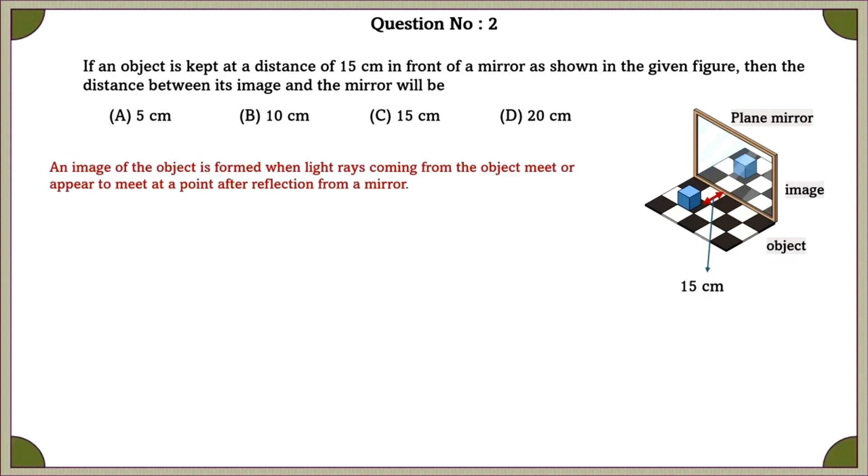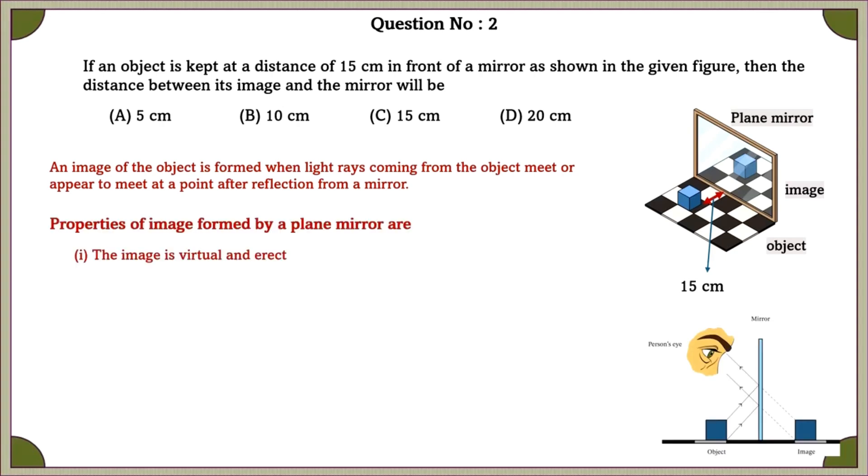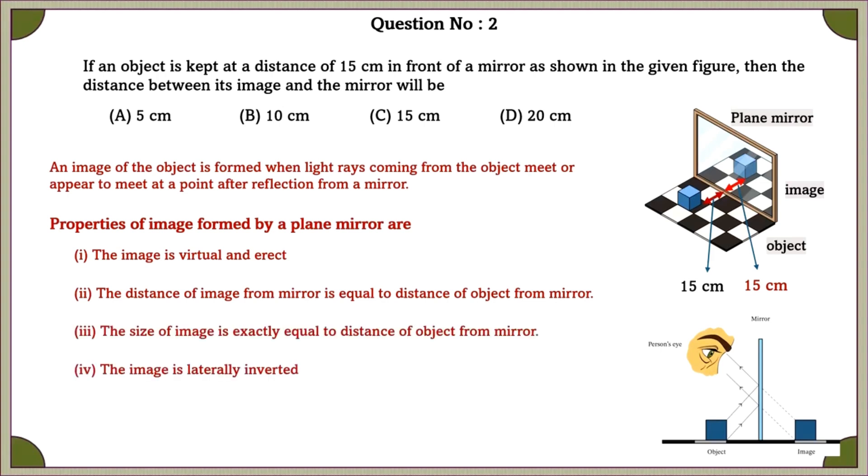An image of the object is formed when light rays coming from the object meet or appear to meet at a point after reflection from a mirror. Properties of image formed by a plane mirror are: the image is virtual and erect, the distance of the image from mirror is equal to the distance of object from mirror. According to this, the distance of image from mirror is equal to the distance of object from mirror. Our answer will be 15 cm.